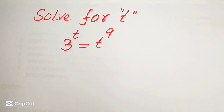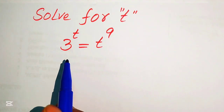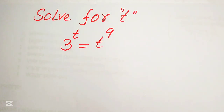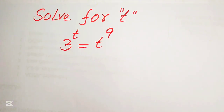Hello everyone, welcome to solve this nice math algebra problem. We have 3 to the power of t equals t to the power of 9, and we will solve this problem for the values of t. If you have any other method in mind, please don't hesitate to write it into the comment section.